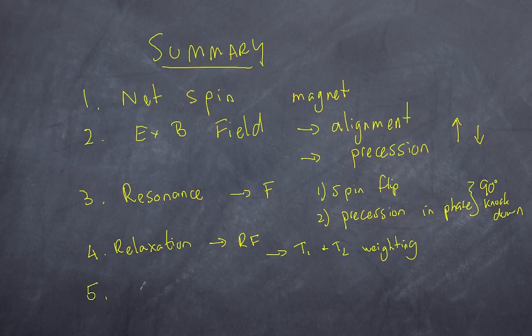And number five, localization is determined by the gradient magnetic fields superimposed over the large external magnetic field. Now if you're at university studying radiology, this is probably quite simplified, but in essence that summarizes how an MRI works. I hope that's been helpful.